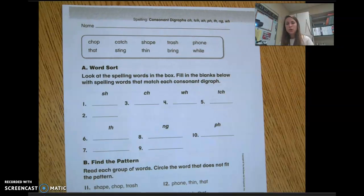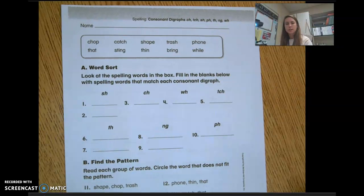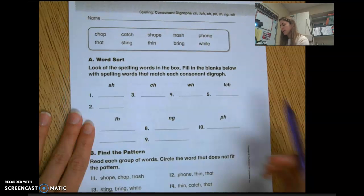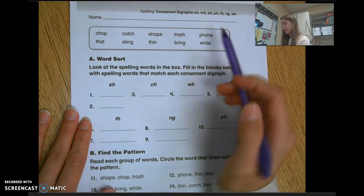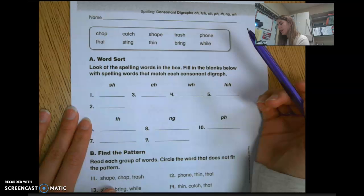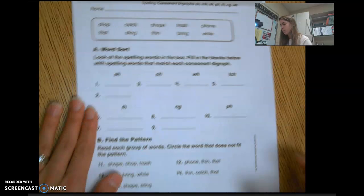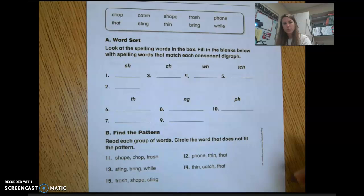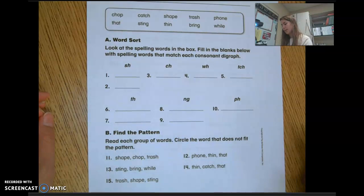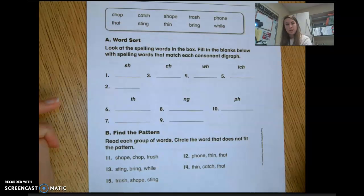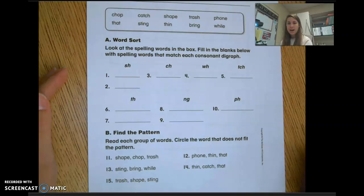So I have all words that have a consonant digraph that could be at the beginning of the word, like in chop, or at the end of the word, like catch and sting. In these areas, you're going to be sorting them based on the consonant digraph in the word. So you're not focusing on whether it comes at the beginning or the end of the word, just by which consonant digraph it has.